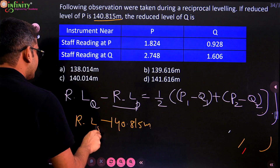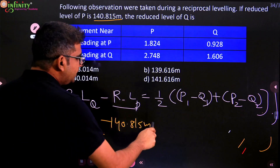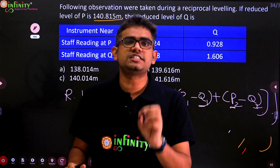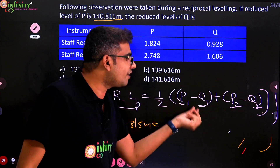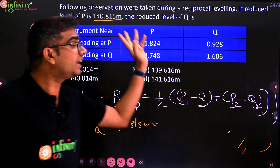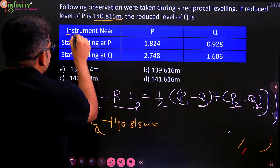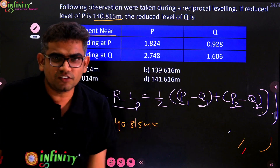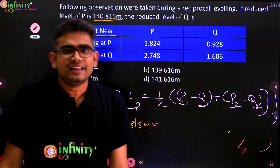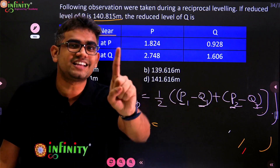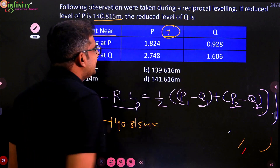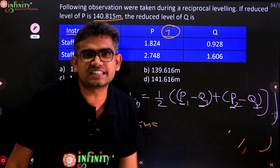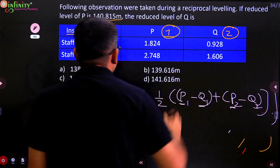Here, four terms are there: P1, Q1, P2, Q2. Most students face the problem of how to take the values of P1, Q1, and P2, Q2. Whenever the instrument is nearer to the first station, that is the first instrument position. Whenever the instrument is nearer to the second station, keep it as instrument position two.